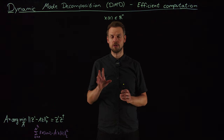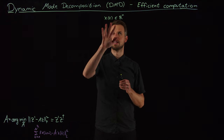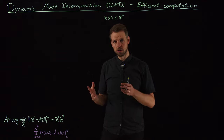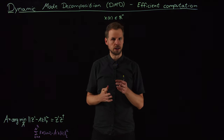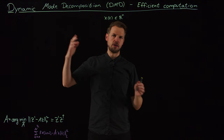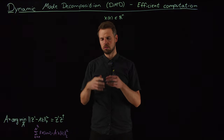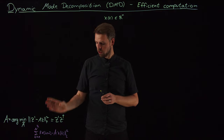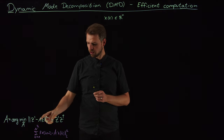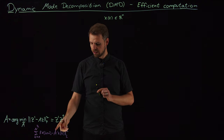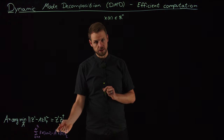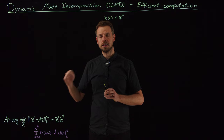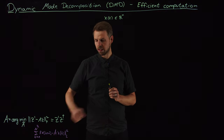Hi everyone, and welcome back to part two of this two-video introduction to dynamic mode decomposition or DMD. We've seen in video one that we want to study a system which may be nonlinear, which may be unknown, or which may be linear but very, very large, and we want to use data instead of prior knowledge. We assumed there exists a matrix A that maps the state at time step k to the state at time step k plus one — a linear discrete-time system mapping xk to xk+1.